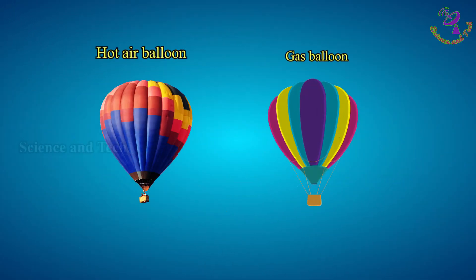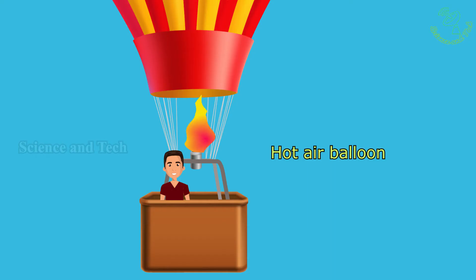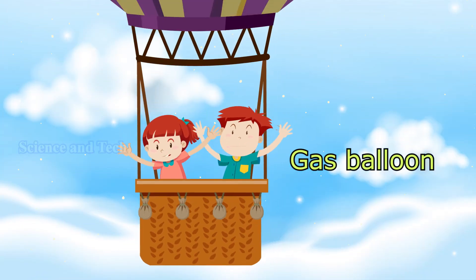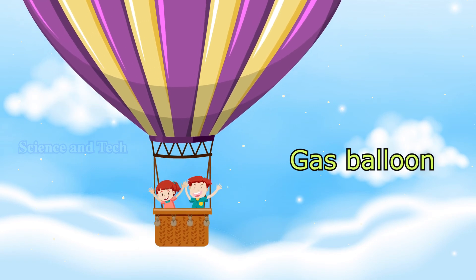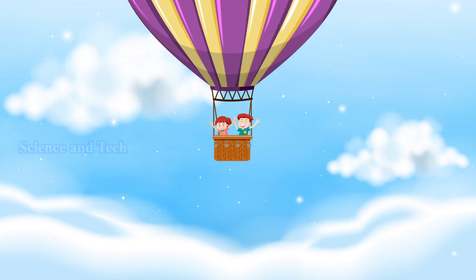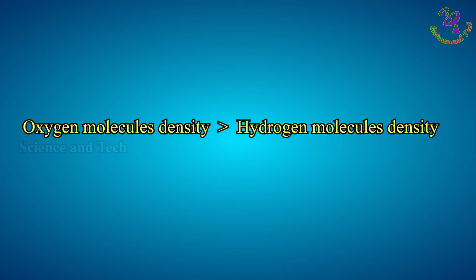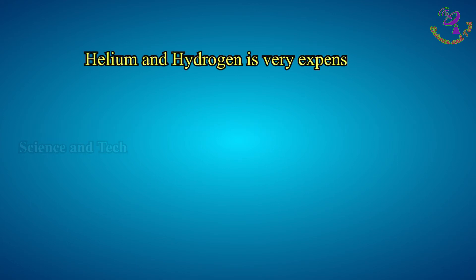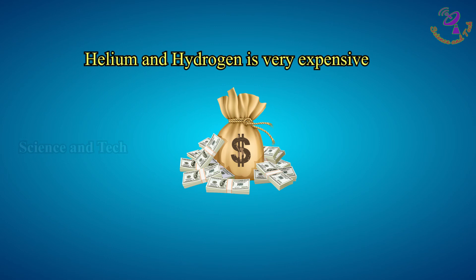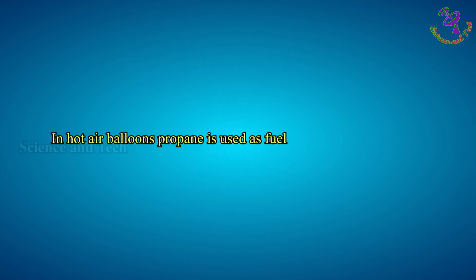This balloon is classified into two types: the hot air balloon and the gas balloon. As for the hot air balloon, the filled air is heated by a heater and the balloon begins to fly. But the gas balloon is filled with gases such as hydrogen and helium instead of air. The main reason for this is that the molecular density of hydrogen and helium gases is lower than that of air. By filling these gases, the balloon can fly without any heater system. However, it is expensive to fill gases like hydrogen and helium, whereas the hot air balloon requires only propane fuel.